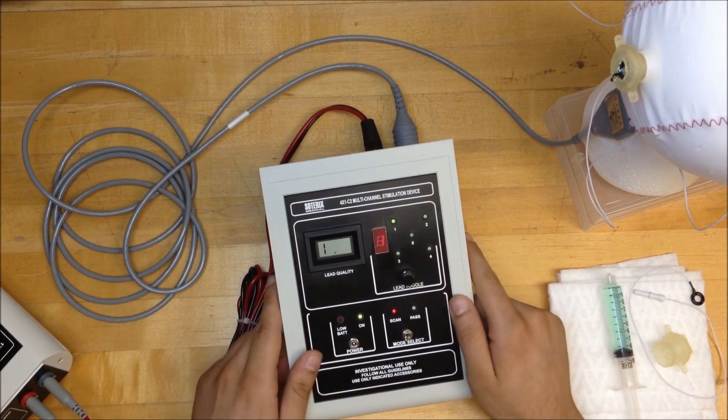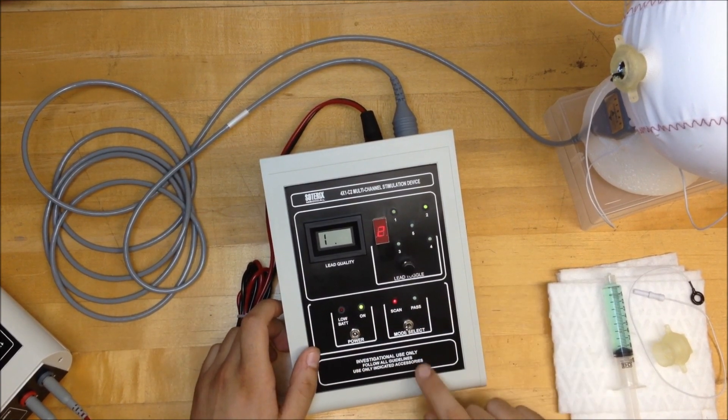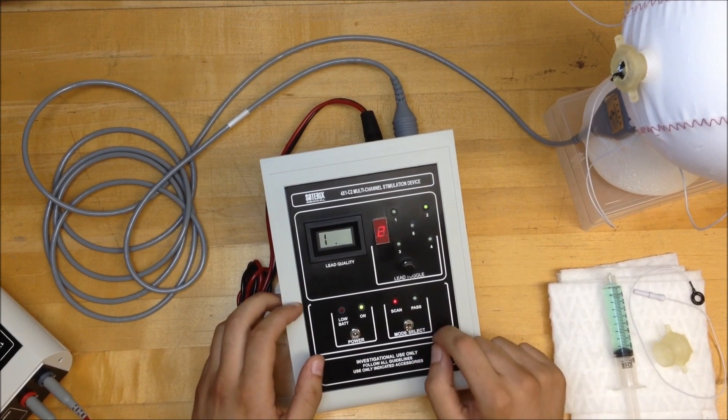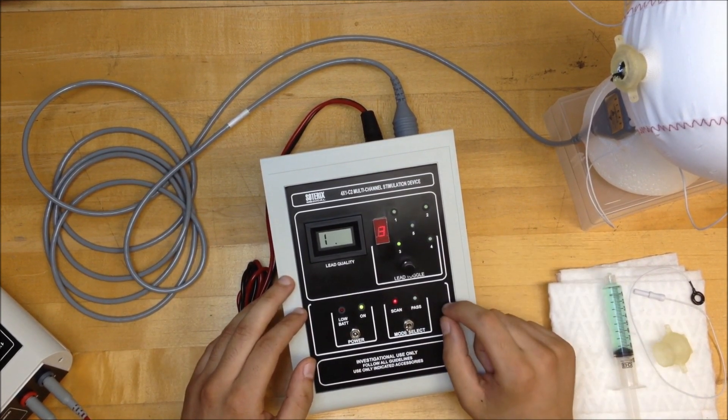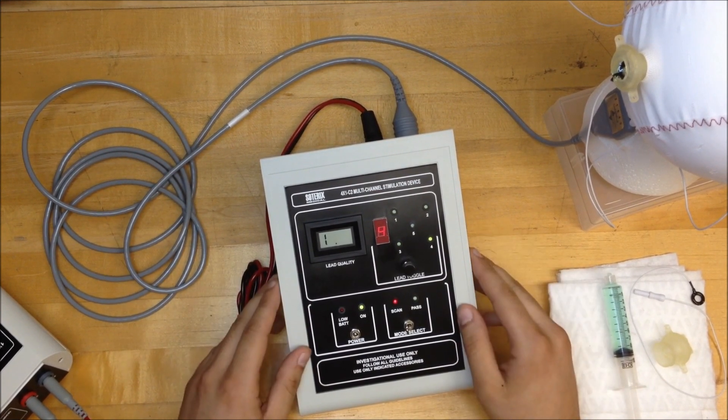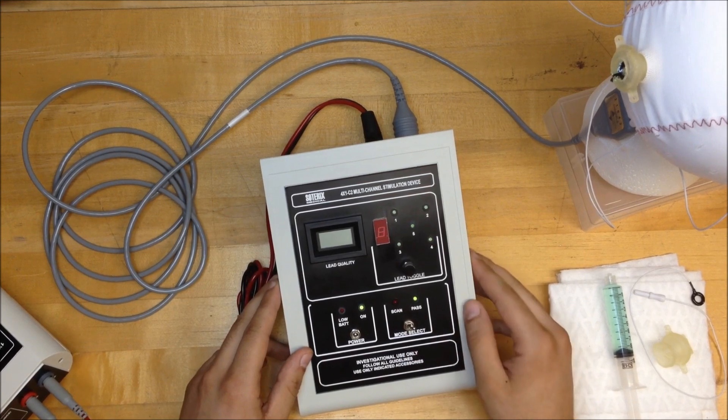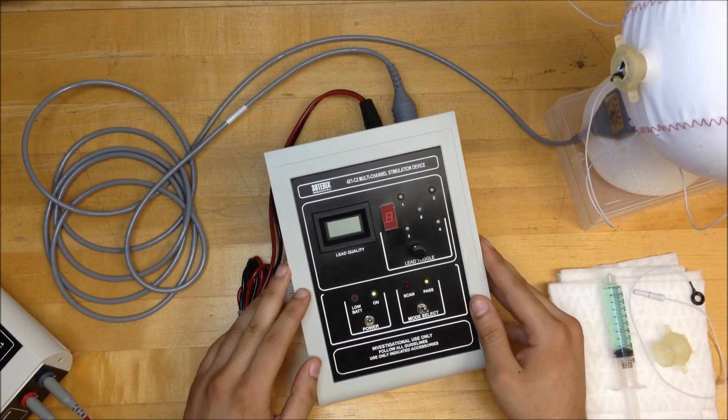There are two modes on this unit: scan and pass mode. The scan mode is used when you set up the electrodes, and once you reach the contact quality you desire, you switch to the pass mode and then activate your two-channel stimulator.